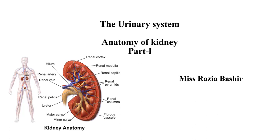In our previous lecture we discussed about the anatomy of the respiratory system. Now we start a new topic: the anatomy of the urinary system. The urinary system is also known as the renal system or urinary tract system. It consists of the kidneys, ureters, bladder, and urethra. The purpose of the urinary system is to eliminate the waste from the body. The urinary tract is like a plumbing system — it drains the urine from the kidney and plays an important role in maintaining homeostasis.